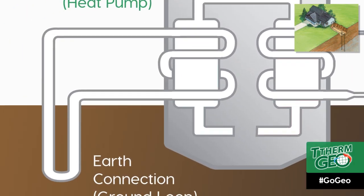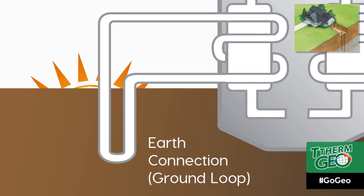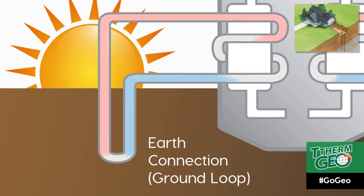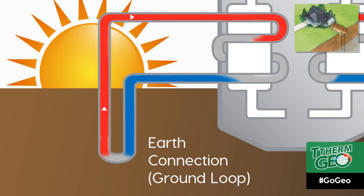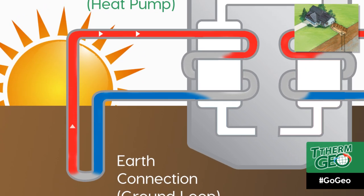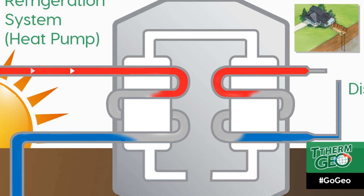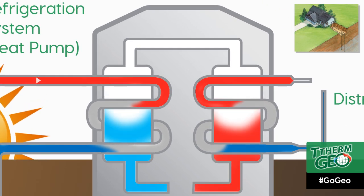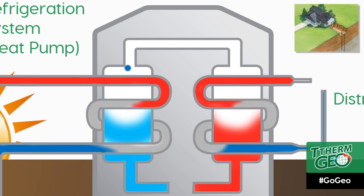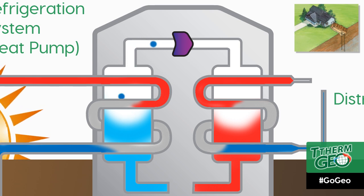The process begins with the sun warming the surface of the Earth. Water is circulated through pipes in the ground and gains heat from the comparatively warm Earth. The warmed water then travels into the geothermal heat pump, and the heat is collected from the ground by the refrigerant in the heat pump. As the refrigerant is heated by the water, it evaporates into gas.